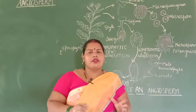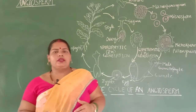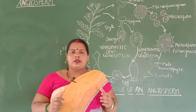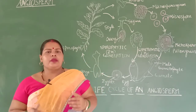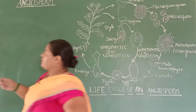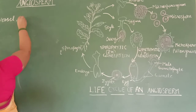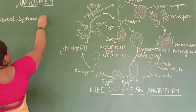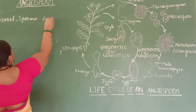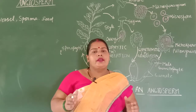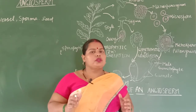In the previous class, students, you read about the gymnosperm, and the main character of the gymnosperm is the naked seed. So today we are going to learn about the angiosperm. Angios means vessels and sperma means seed. So the plants bearing vessels and seeds belong to the group angiosperm.